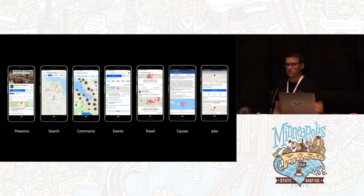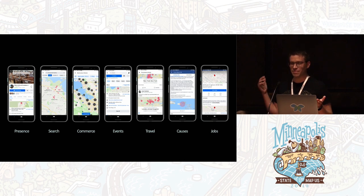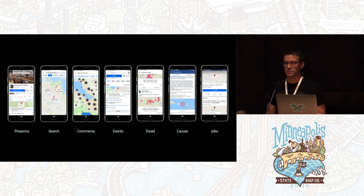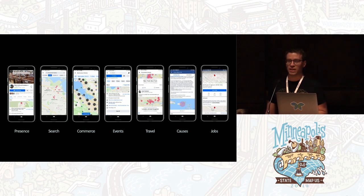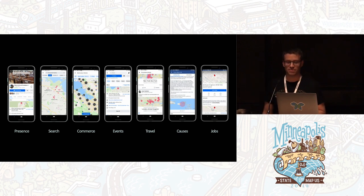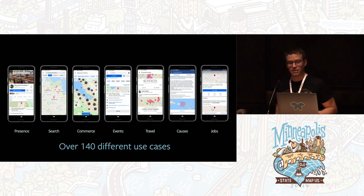You may be surprised to learn Facebook has maps — we do indeed. It's in lots of places, because high-quality maps make for better user experiences. We have maps in places search, events, travel, humanitarian causes, jobs, or even things like sharing your location on Messenger with a friend. There are over 140 different use cases currently that use maps at Facebook across our library of apps.